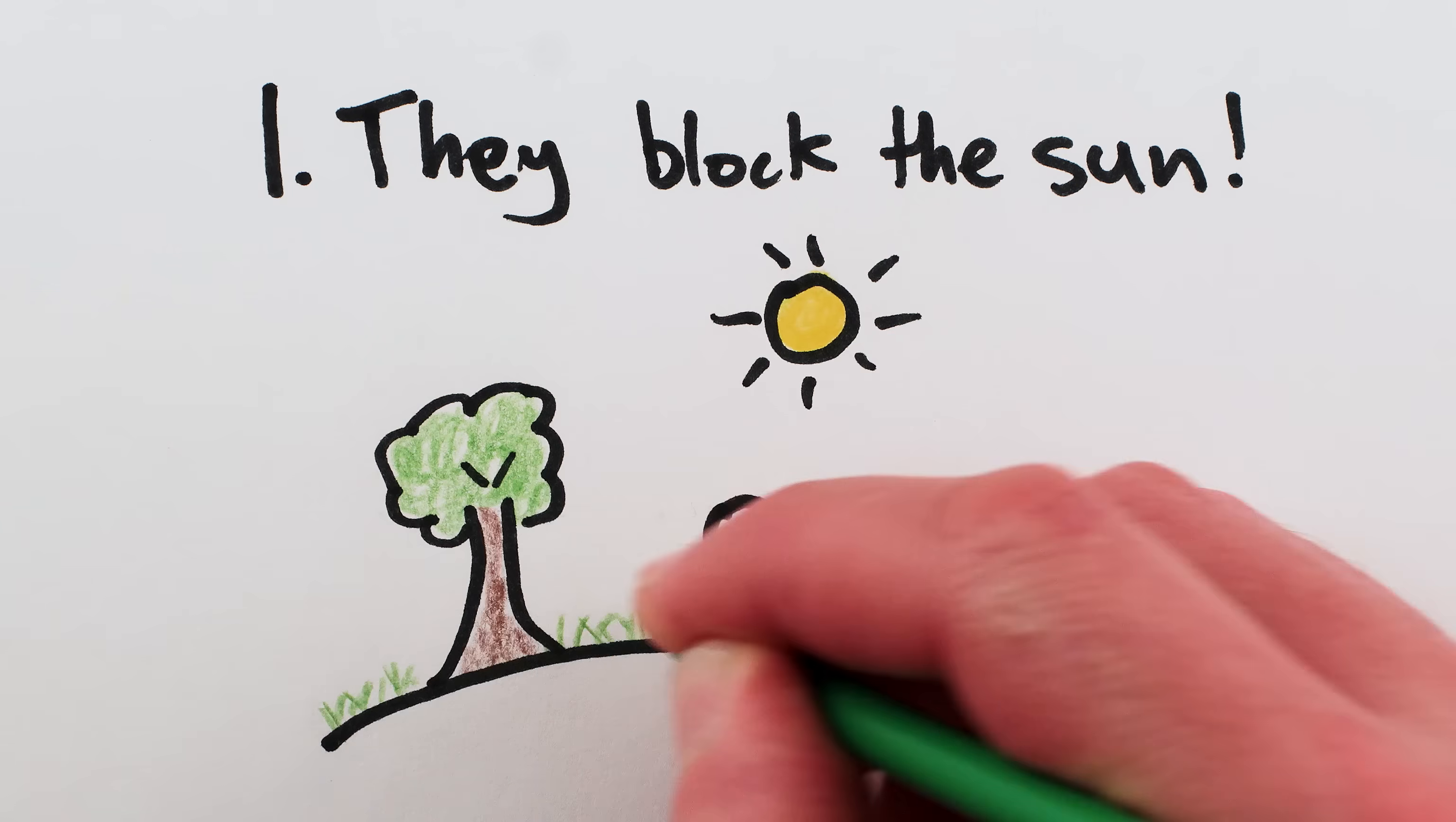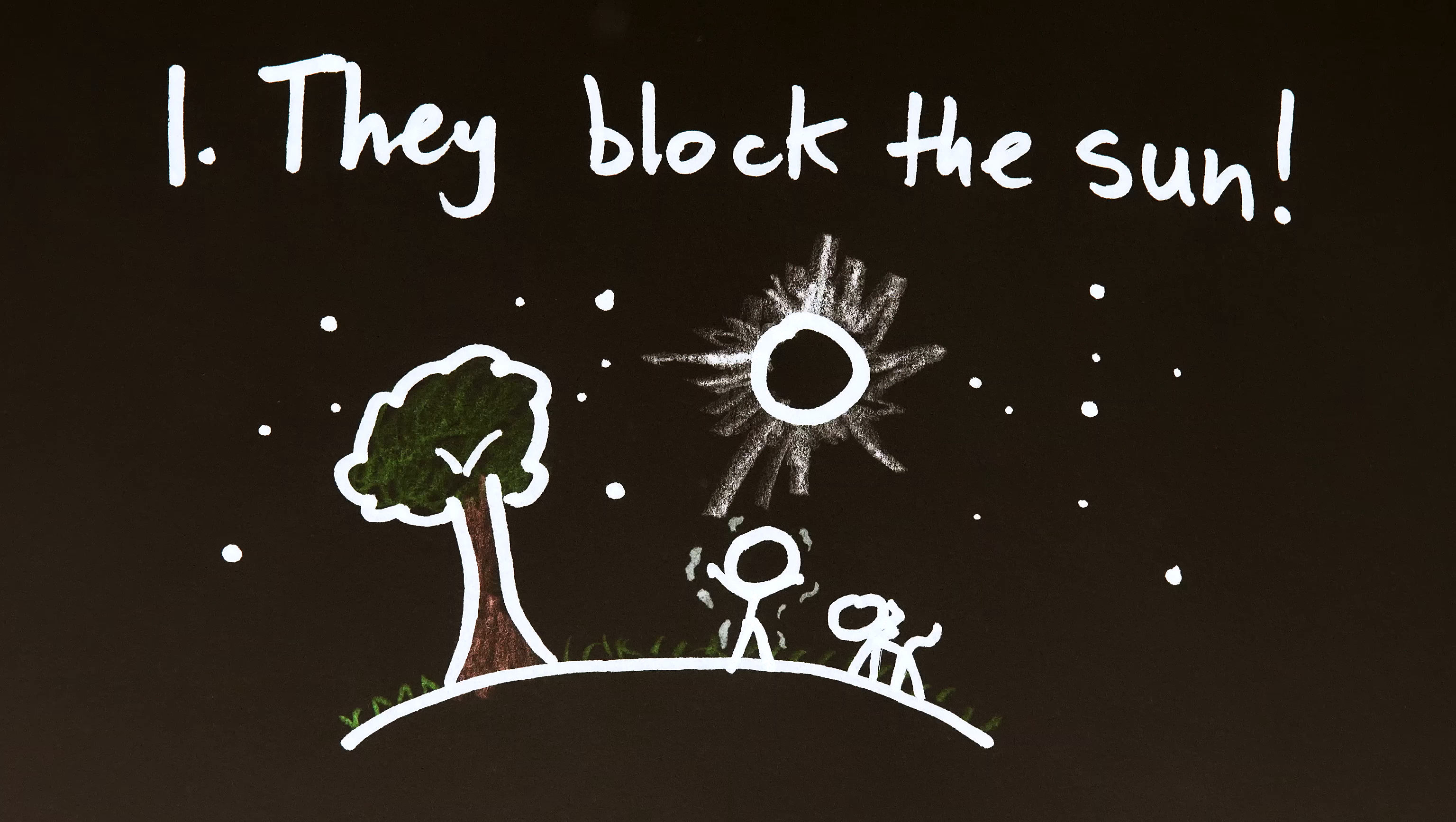First, and obviously, they block the sun in the middle of the day so it gets dark, cold, you can see stars, etc.